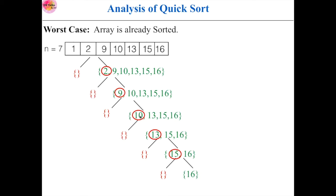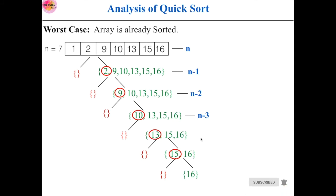For partitioning the given array, the partition algorithm takes n time at level 0. The left sub-array is empty, but the partition algorithm takes n−1 time at level 1 because it compares the pivot with all remaining elements — here we have six elements, so n−1. At level 2, the left sub-array is empty, and to partition the right sub-array it takes n−2 time because there are five elements. At level 3 it takes n−3, at level 4 it takes n−4, and at level 5 it takes n−5.